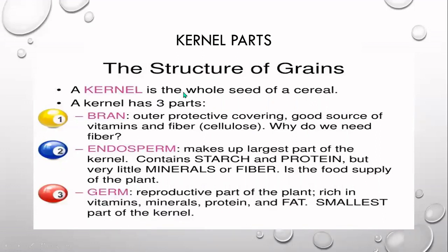The bran is the outer protective covering and a good source of vitamins and fiber. Fiber enables peristaltic movements of food in the intestine and gives the feeling of fullness. The endosperm makes up the largest part of the kernel, is rich in starch and proteins, with very little minerals or fiber, and supplies food to the plant during germination. The germ is the reproductive part, rich in vitamins, minerals, proteins, and fat, and is the smallest part of the kernel.